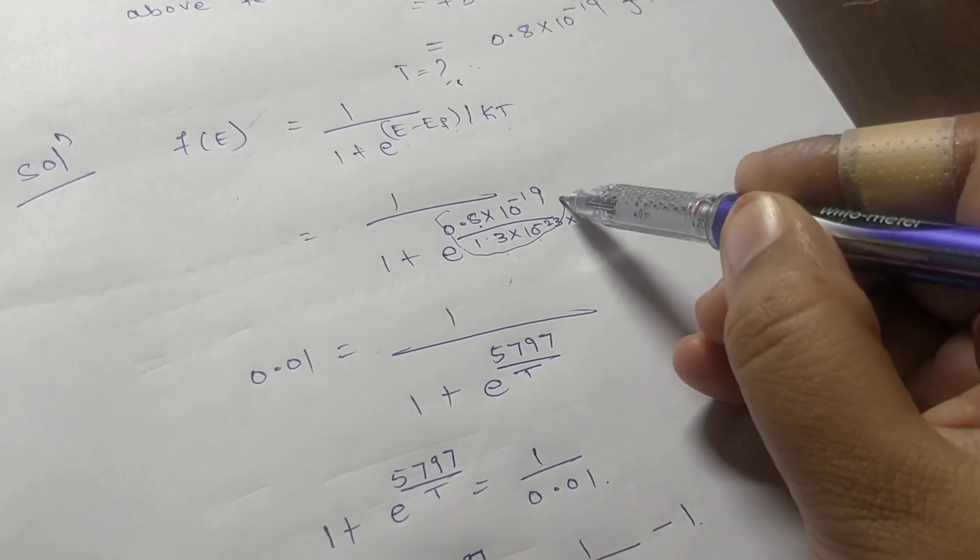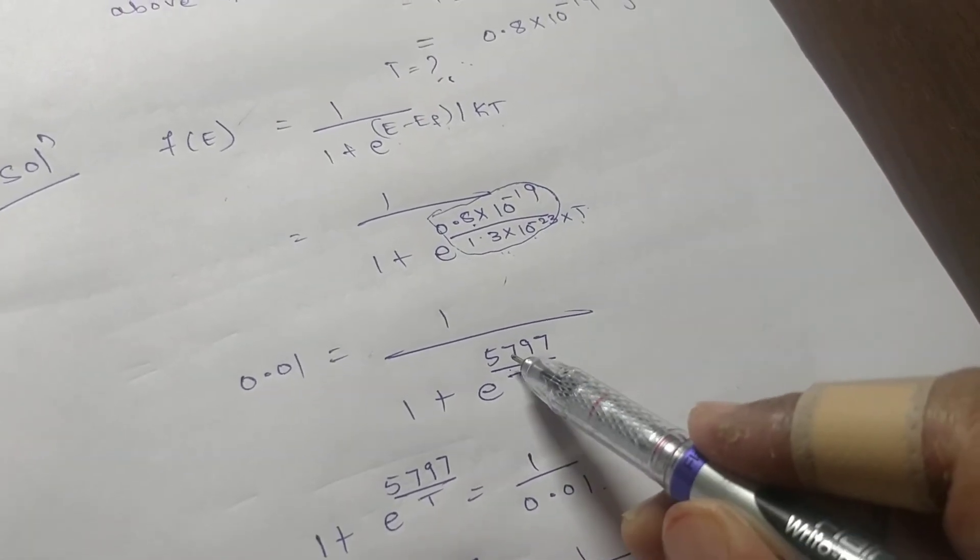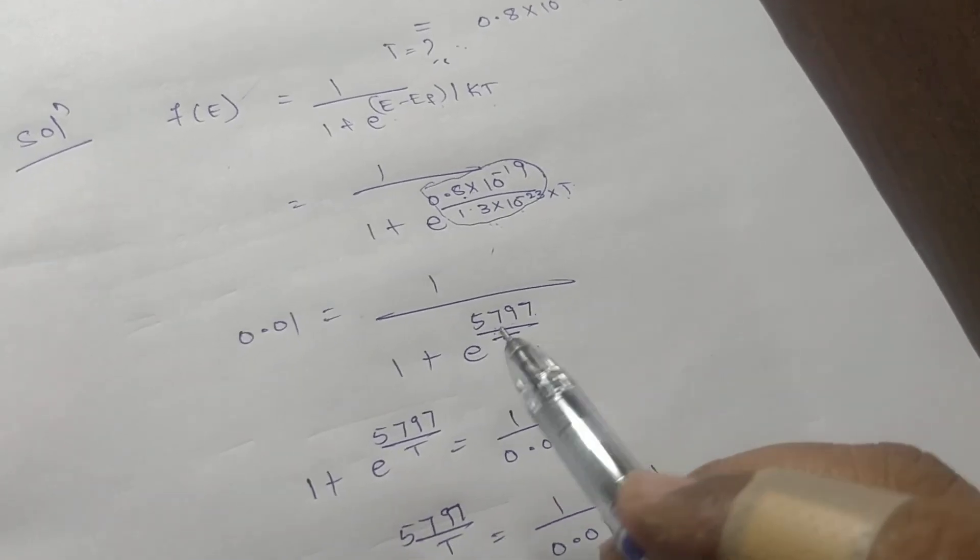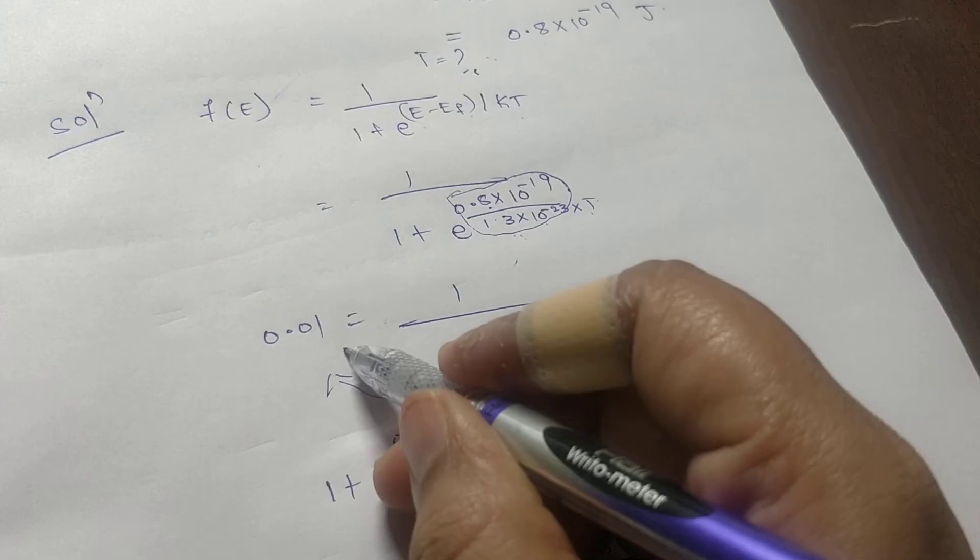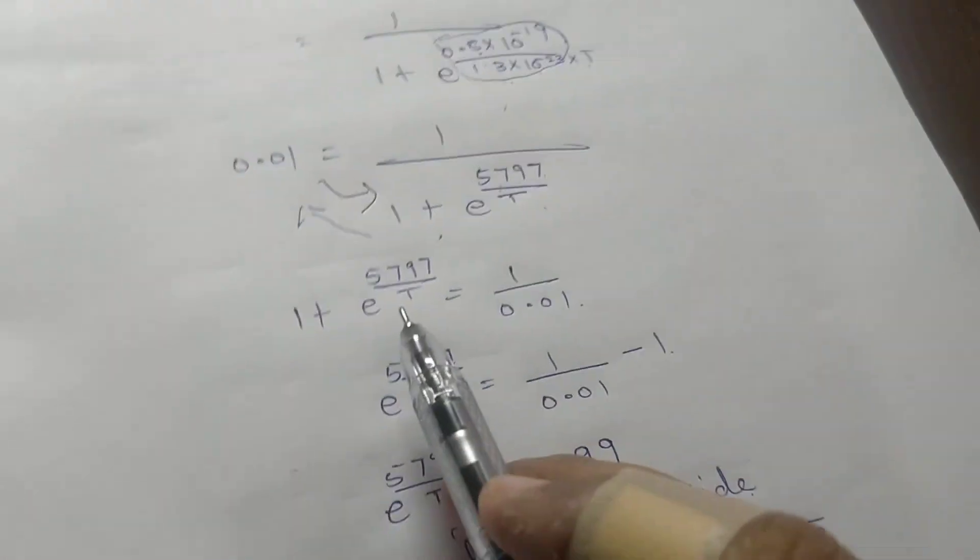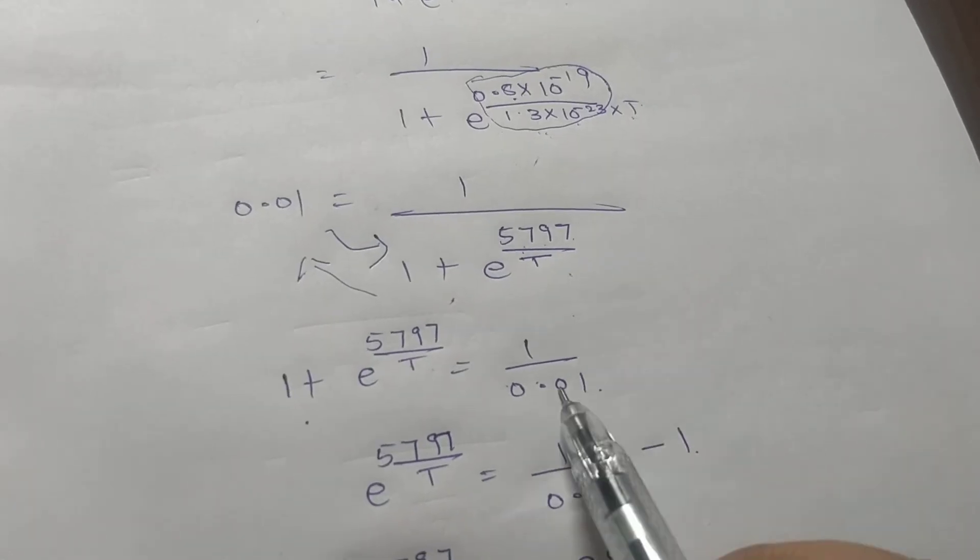Okay, so here take this value here and this value here. So what you'll get: 1 plus e to the power 5797 over T is equal to 1 divided by 0.01.